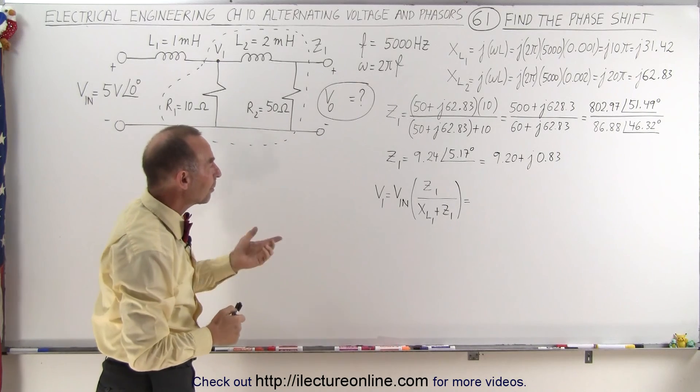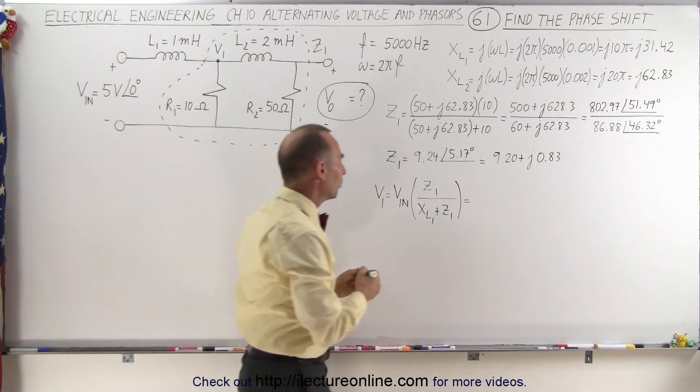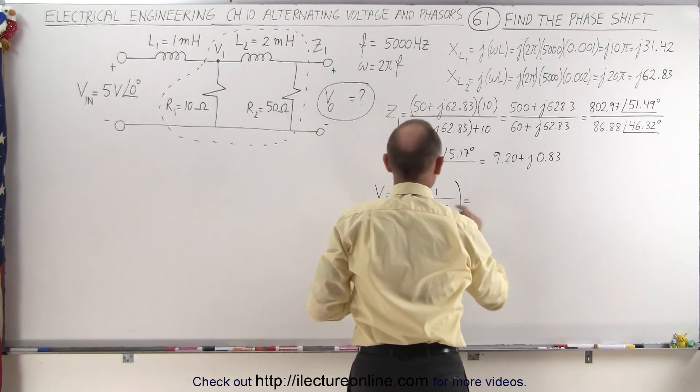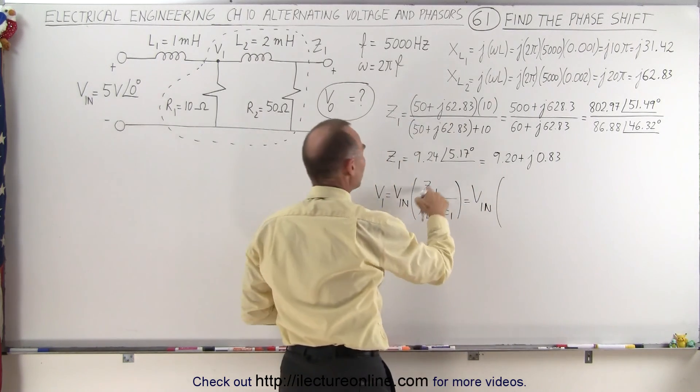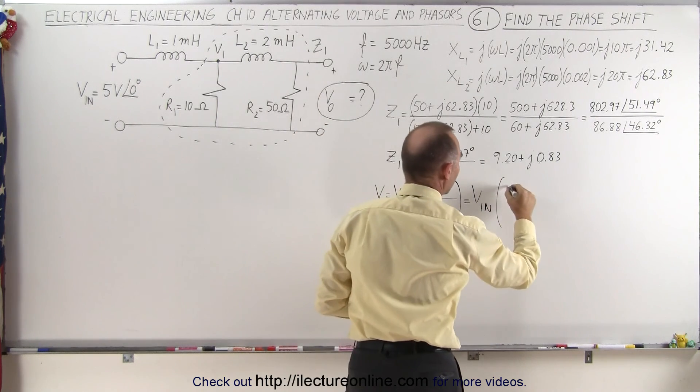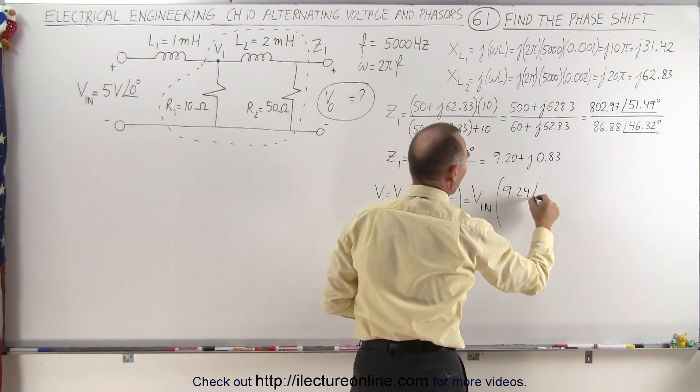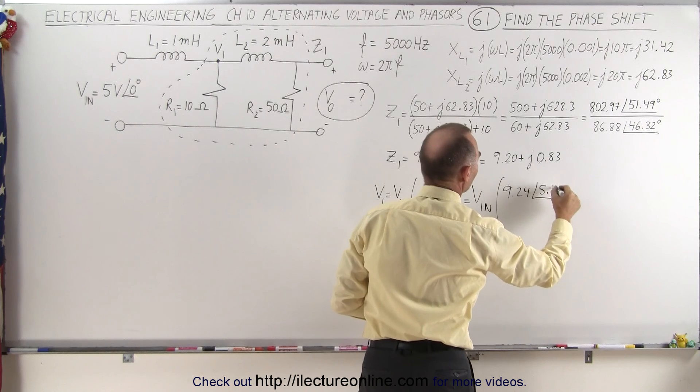Let's go ahead and continue with the problem from this point. The input voltage, we'll just leave it as Vin. The impedance in the numerator, let's use this format: that would be 9.24 with a phase angle of 5.17 degrees.